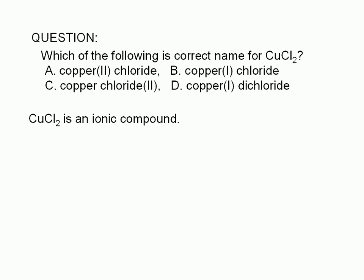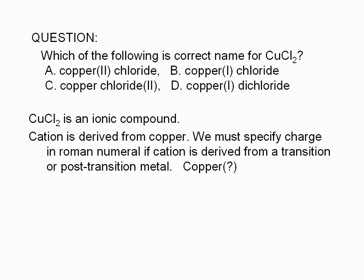Cations are generally derived from metallic elements, so we know that the cation in this compound is a copper ion. Since copper is a transition metal, we have to specify its charge using a Roman numeral in parentheses, and therefore eliminate choice C, where the charge of copper is not specified.